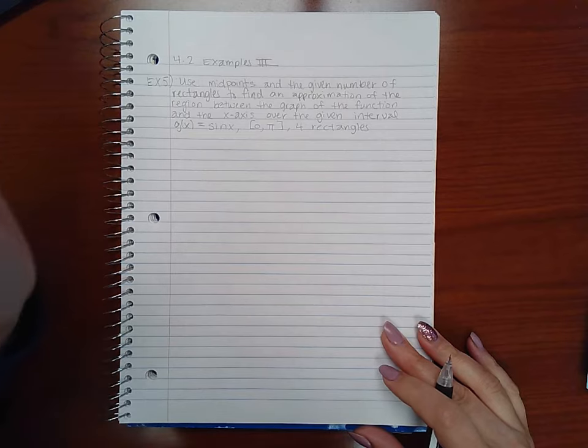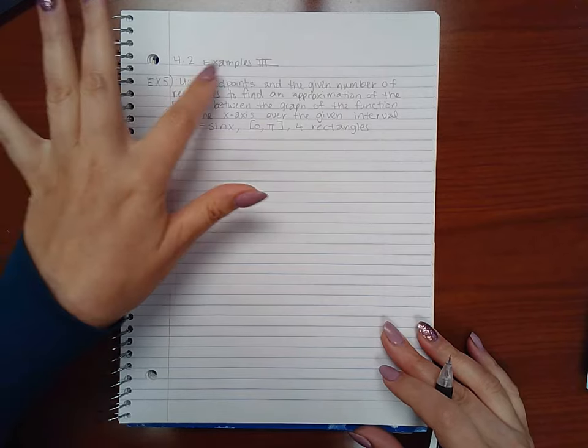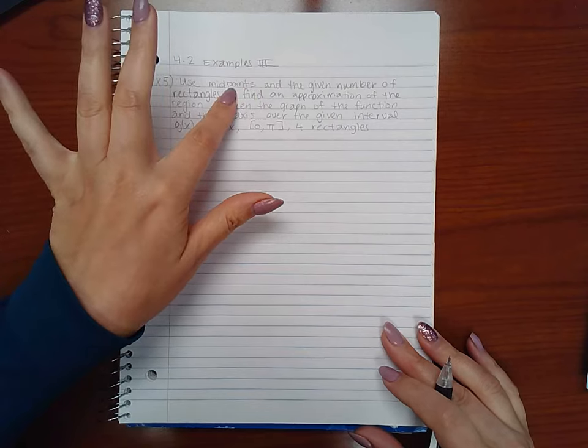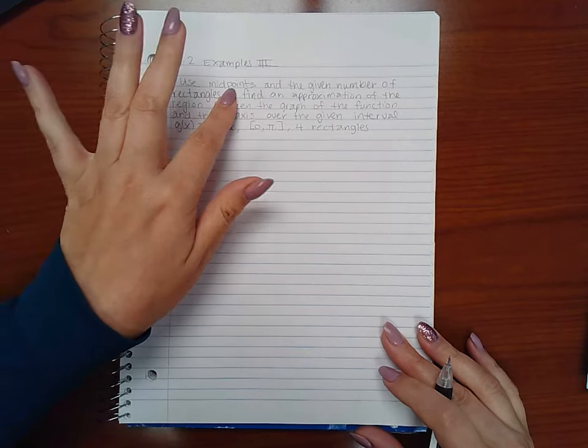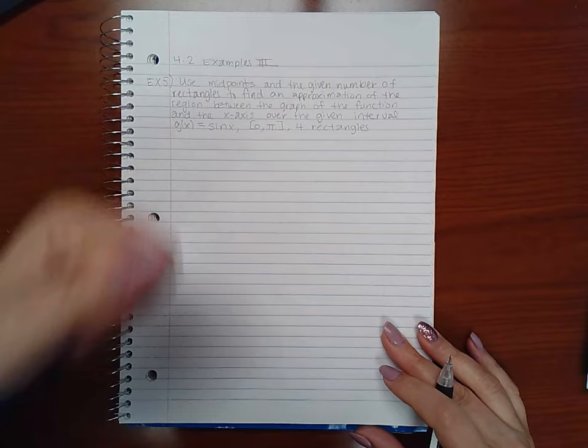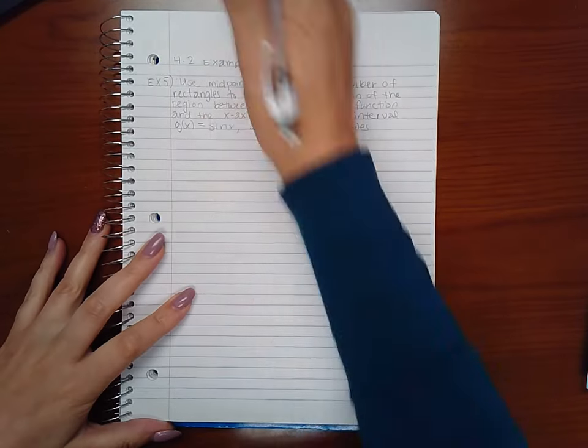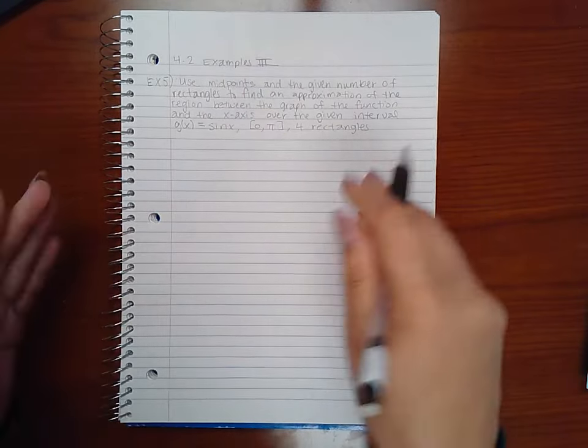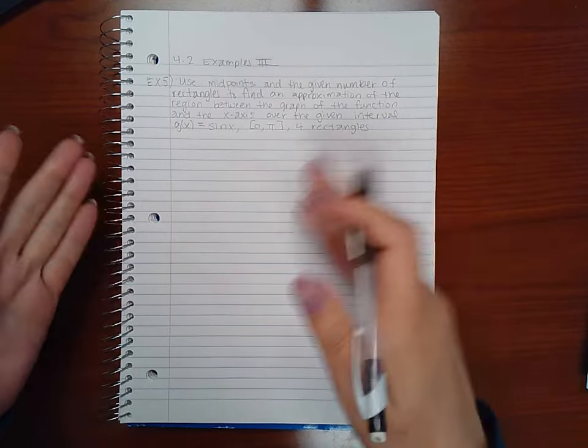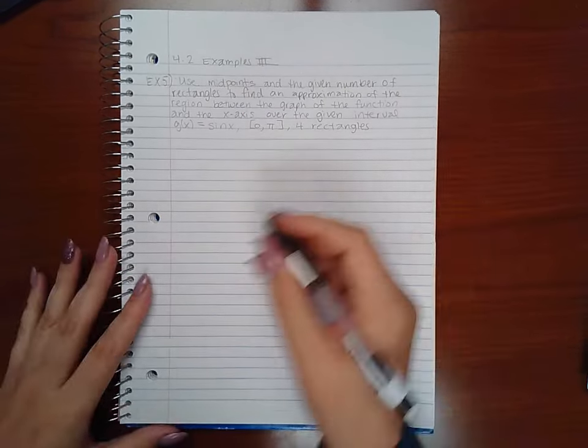So the previous example was left endpoints and right endpoints. This time our endpoints are not endpoints but they're midpoints. So we'll see what that looks like in just a second. So it's a little bit different. We have to do it two different times. We can just do it once.